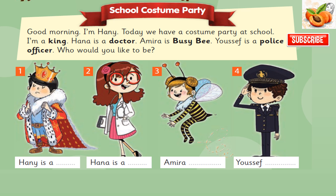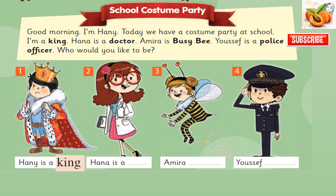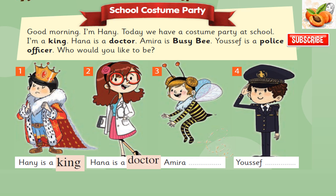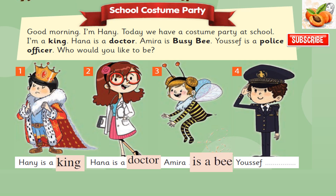Who would you like to be? 1. Look at me. What am I? You're a king. 2. Look at me. What am I? You're a... 3. Look at me. What am I? You're a... 4. Look at me. What am I? You're a police officer.